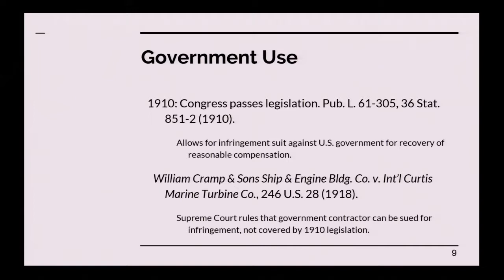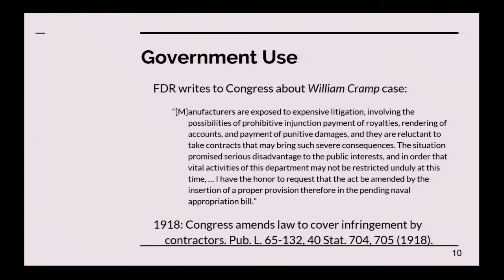In 1910, Congress passed legislation to remedy this situation. It was proposed by Philander C. Knox, former Secretary of State and Attorney General, who served in two non-consecutive Senate terms across three different presidential administrations. The legislation allowed for an infringement suit against the U.S. government for recovery of reasonable compensation. Then in 1918, in William Cramp & Sons Ship and Engine Building Co. v. International Curtis Marine Turbine Company, the court ruled that government contractors could not be sued under the government use statute. FDR wrote to Congress noting that manufacturers were being exposed to expensive litigation involving prohibitive injunctions and payment of royalties, requesting that they amend the statute to cover infringement by contractors, and in 1918 Congress did so.